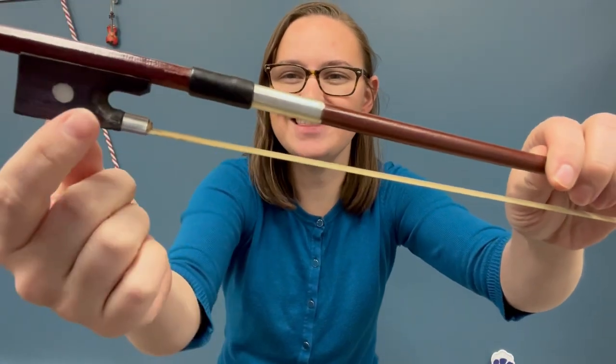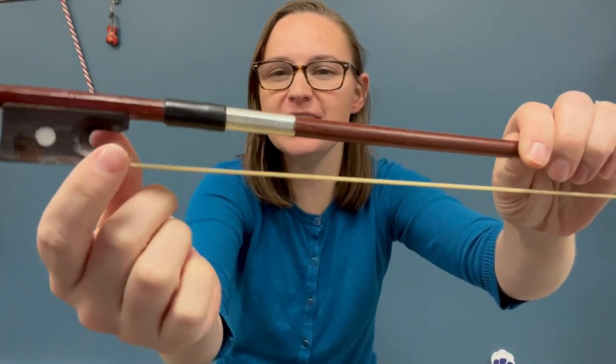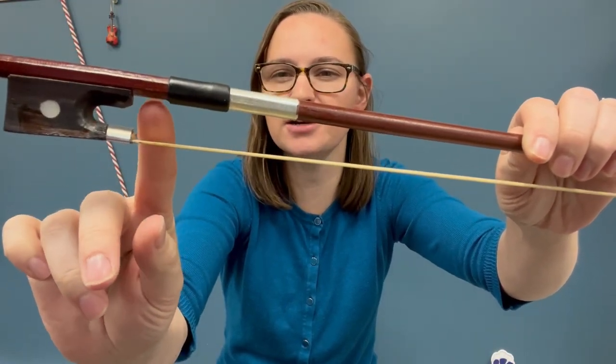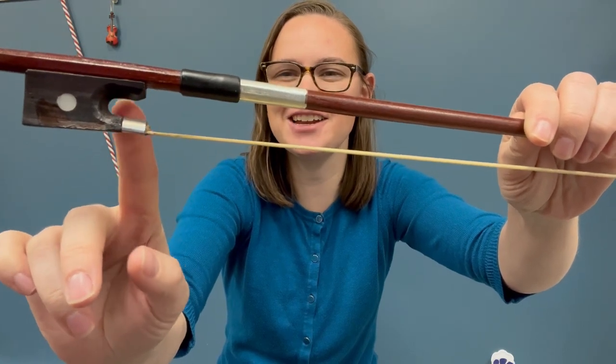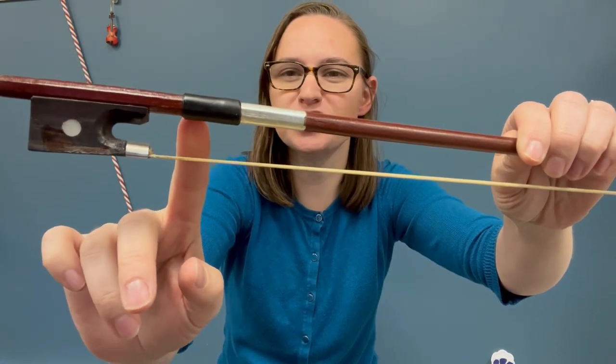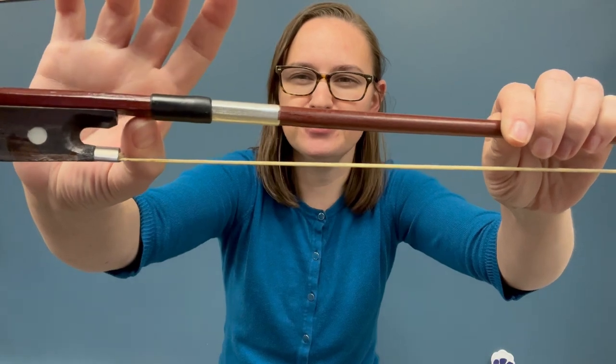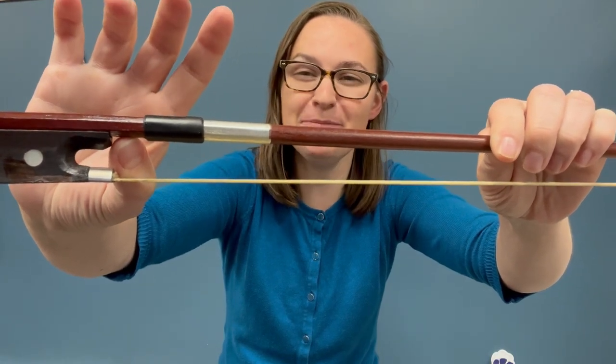Your thumb goes on the stick of the bow just outside the frog, on this bald spot just outside the U shape of the frog and just before this black grip. Right there is where my thumb will go on its tip, nice and bent.